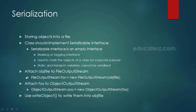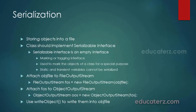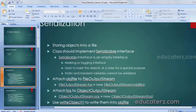Moreover, static and transient variables cannot be serialized. The next step is we need to attach a file to the FileOutputStream, attach the FileOutputStream to the ObjectOutputStream, and using the writeObject method we can write the objects into a file. So let's see an example of it.